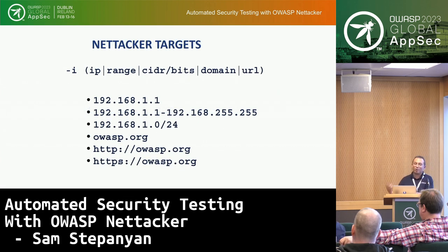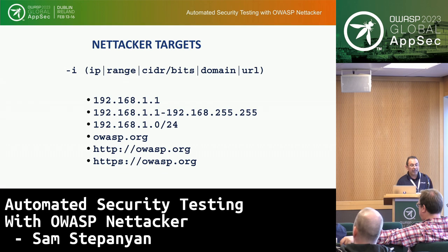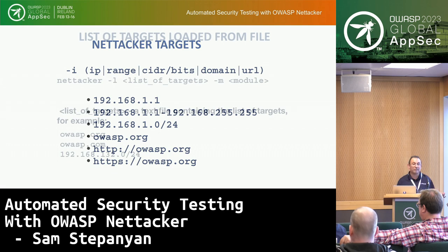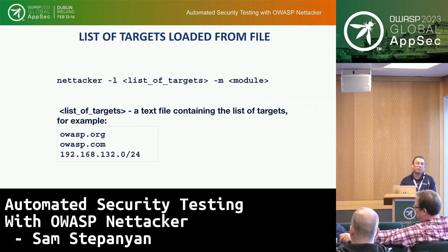What makes NetTacker a great scanner is the flexibility of targets: you can scan one IP address, an IP address range from start to end, subnets based on CIDR, subdomains, or specific URLs with HTTP or HTTPS. You can also load targets from a text file — great for large organizations with several domains and many IP ranges. Just create a text file listing all the domains and IP ranges you own, and that's your targets file. For OWASP, for example, we own OWASP.org, OWASP.com, and have internal IP ranges. You can run NetTacker from inside or outside your network.